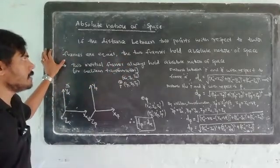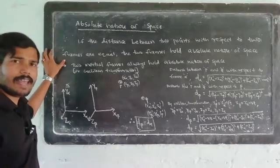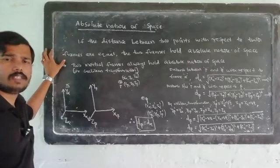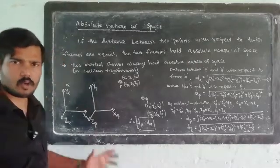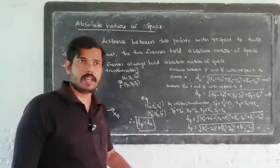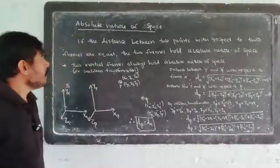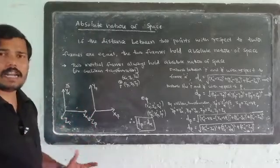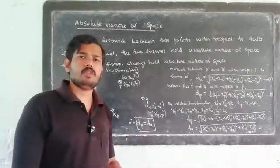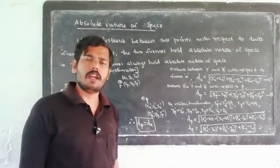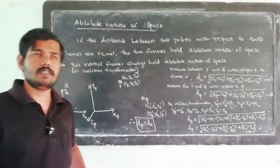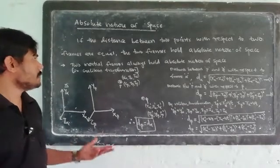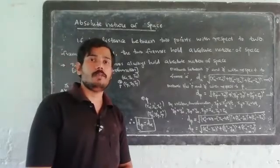If we have absolute nature of time, one event's time coordinate with respect to two frames is equal. The frames then hold the absolute nature of time. Similarly, if you measure the distance between two points, and both frames measure the same distance, then the two frames obey the absolute nature of space.